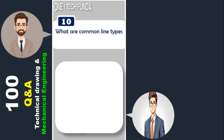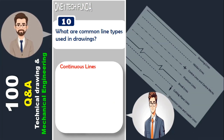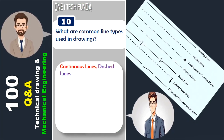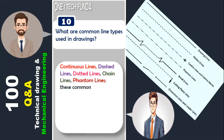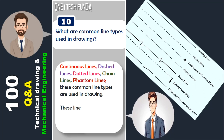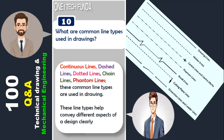What are common line types used in drawings? Continuous lines, dashed lines, dotted lines, chain lines, and phantom lines are common line types used in drawings. These line types help convey different aspects of a design clearly and effectively.